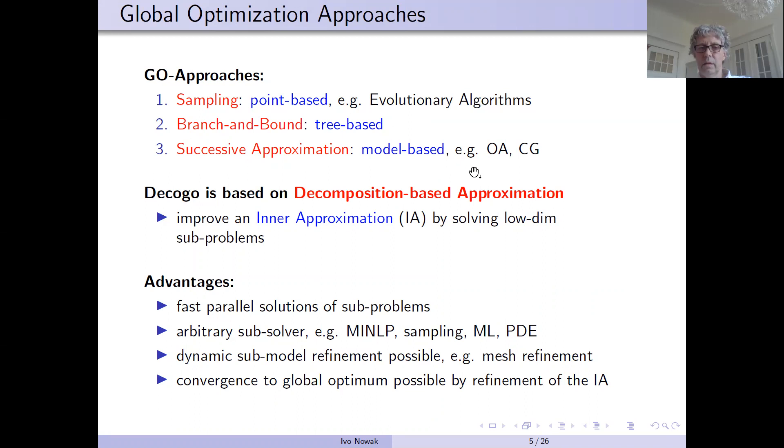One of these methods is outer approximation, which is very efficient for solving convex MINLP. And we are using an inner approximation method, which is very much similar to the column generation method.